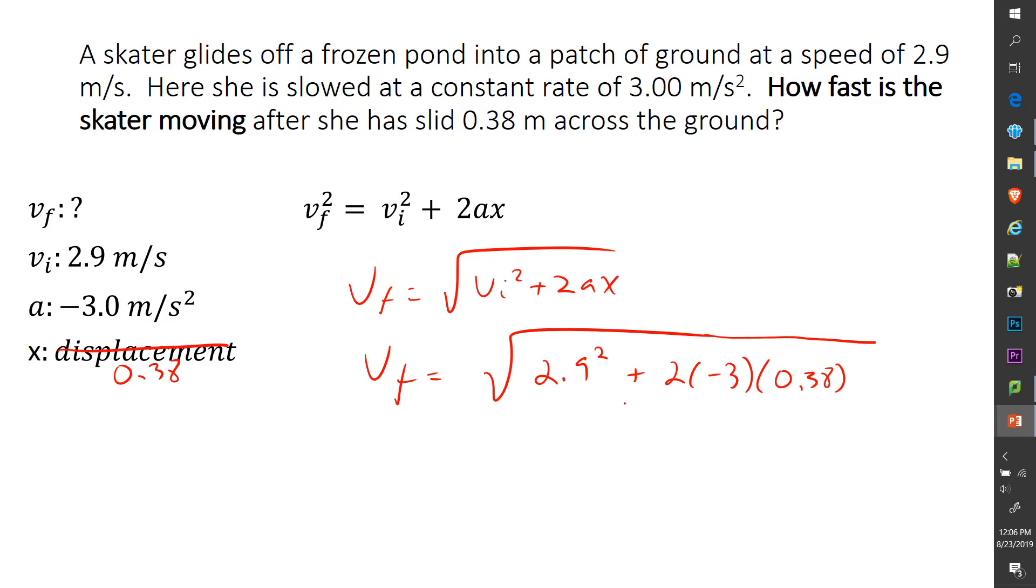So in my calculator, I hit square root. And if it gives me one parenthesis, I want another parenthesis, 2.9 squared, close parenthesis, plus, open parenthesis, 2 times negative 3 times 0.38, close parenthesis, close parenthesis, equals, and you get 2.4758. But if I'm going to round that, 2.5 meters per second. So there's your final velocity in this problem. You slowed from 2.9 to 2.5 meters per second.